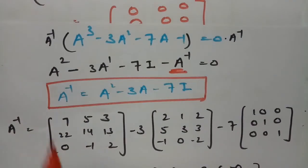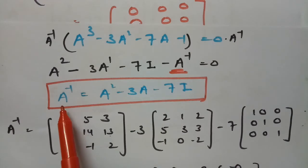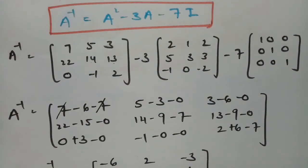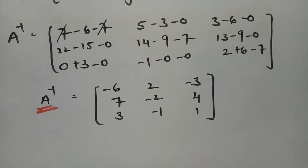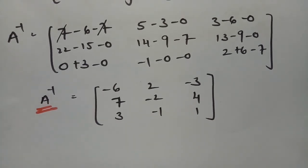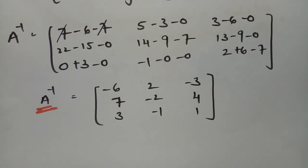After verification, multiply both sides by A inverse to get the value of A inverse. After substituting all values, we obtain A inverse. I really tried hard to bring this across to you and I'm sure you must have understood well. Thank you — I'm profoundly grateful to all my viewers. I'll be uploading many more videos in this series. Please subscribe to this channel and share it with your friends.